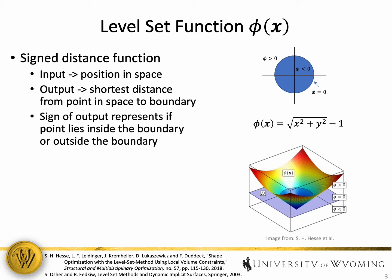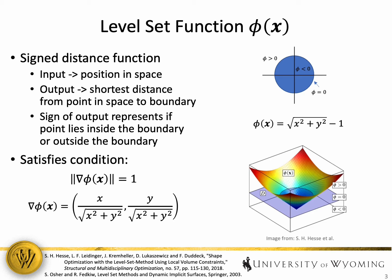And so in three dimensions, it would look like the plot that you see on the bottom right. Now in addition, the signed distance function must satisfy the condition that the L2 norm of the gradient equals one. And so if we look at the gradient for the level set function of the circle, and if you were to take the L2 norm of that, it would indeed satisfy the condition.